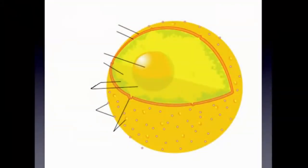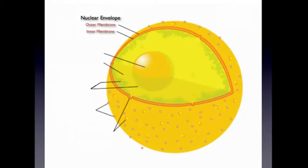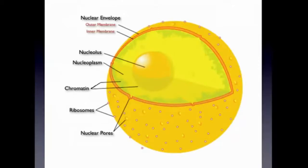Here is a lovely diagram of the nucleus and its sub-organelles. These organelles include the nuclear envelope, consisting of an outer and inner membrane; the nucleolus, located in the center of the nucleus; the nucleoplasm, which is a gel-like substance between the nucleolus and nuclear envelope; chromatin, which is suspended in the nucleoplasm; ribosomes, which pepper the outer membrane; and nuclear pores, which are holes which allow substances, such as mRNA, passage through the envelope.